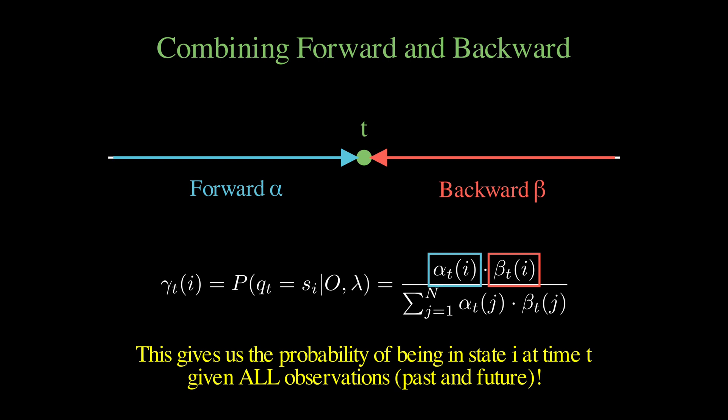Think about it this way. Alpha brings us all the evidence from the past up to time t. Beta brings us all the evidence from the future, after time t. And when we combine them, we have all the evidence from the entire sequence focused on that specific time point.